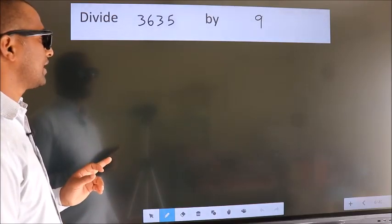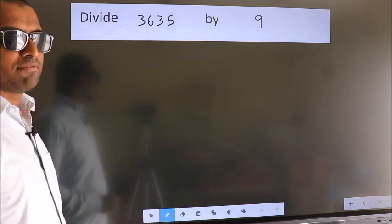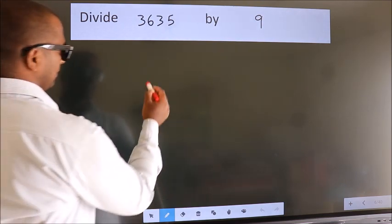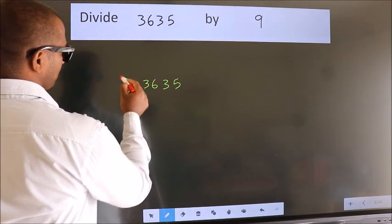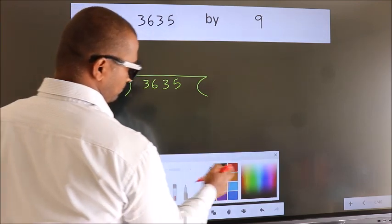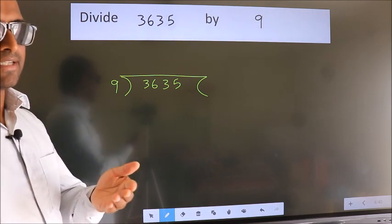Divide 3635 by 9. To do this division, we should frame it in this way. 3635 here, 9 here. This is your step 1. Next.